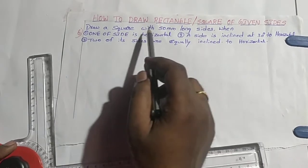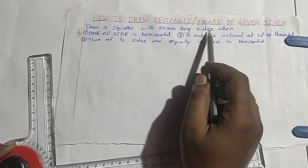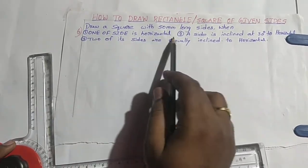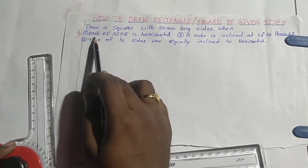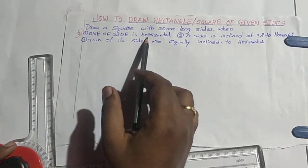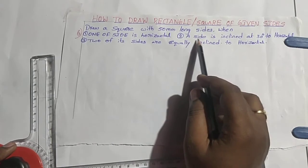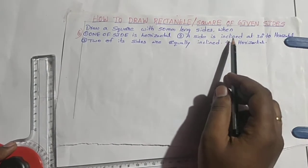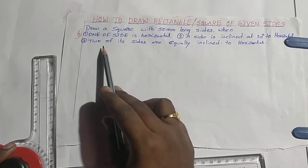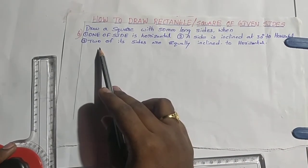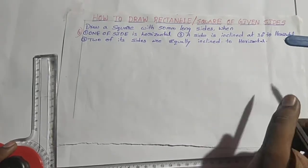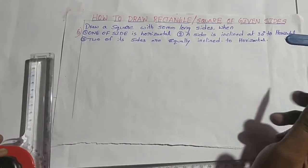I am taking an example: draw a square with 50 mm long sides. We need to draw it in three conditions. The first condition is that one of the sides is horizontal. The second condition is that a side is inclined at 30 degrees to the horizontal. The final condition is that two of its sides are equally inclined to the horizontal.